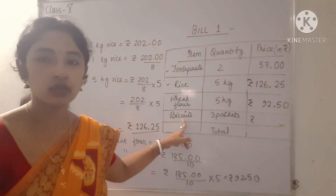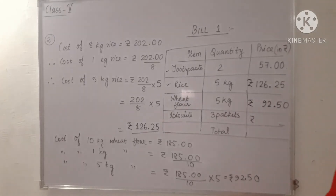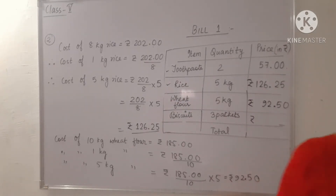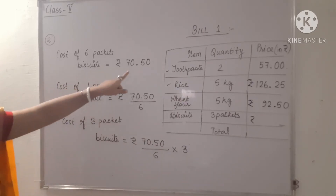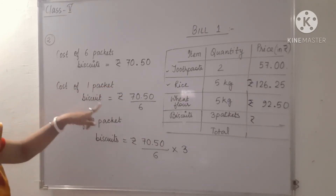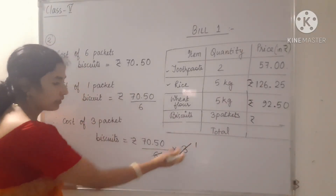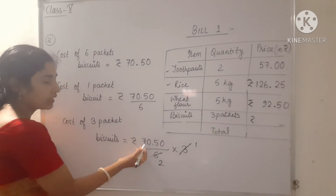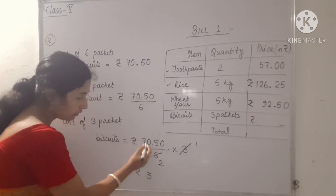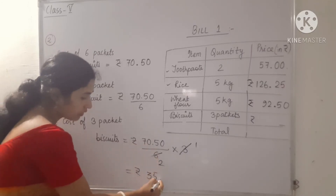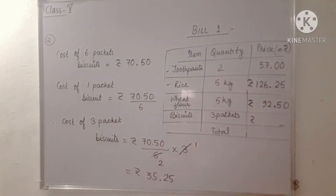For biscuits: cost of 6 packets is rupees 74.50. Cost of 3 packets biscuit will be rupees 74.50 divided by 6, times 3. We cancel 3 and 6 — 3 twos are 6 — so divide 74.50 by 2, giving rupees 35.25. That is the cost of 3 packets of biscuit.